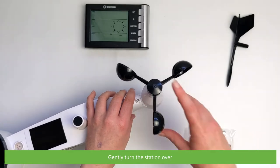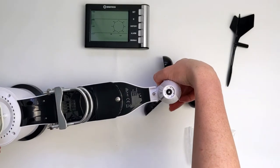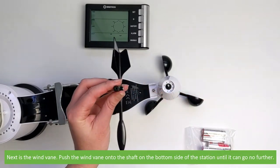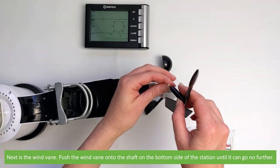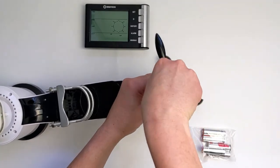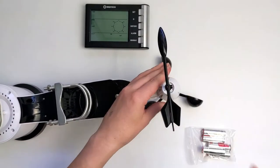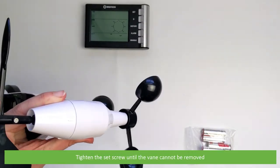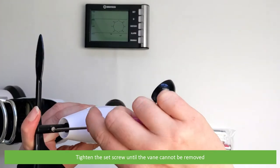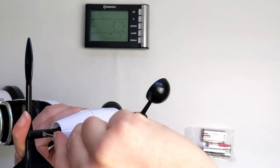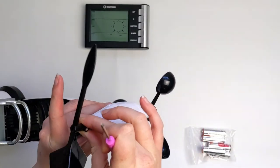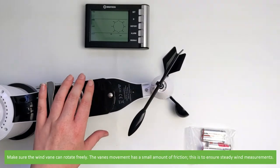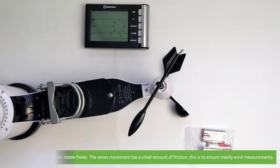Gently turn the station over. Next is the wind vane. Push the wind vane onto the shaft on the bottom side of the station until it can go no further. Then tighten the set screw until the vane cannot be removed. Make sure the wind vane can rotate freely. The vane's movement has a small amount of friction. This is to ensure steady wind measurements.